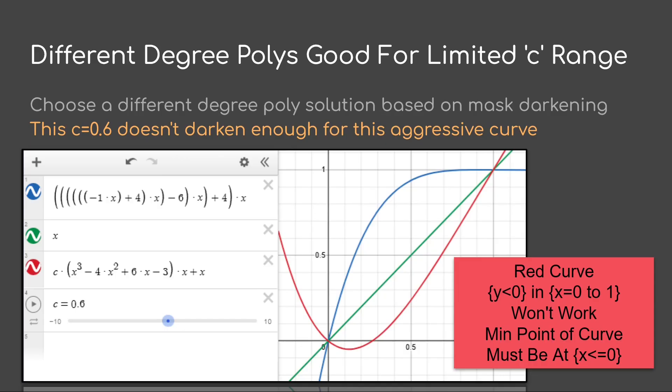For example, if we use the original equation and we set it to only 0.6 as the amount of darkening, you'll notice the original equation is too aggressive. For example, when we take the solution to the darkening part of the curve, it's starting to go under 0 in the range of x equals 0 to 1. So that's not going to work. We have to make sure that the lowest point of the darkening curve must be at somewhere x equals 0 or less than 0.